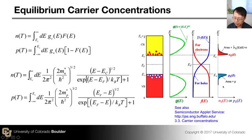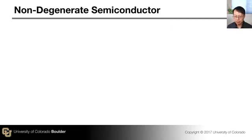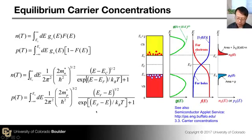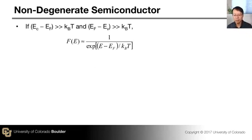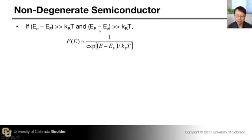To perform these integrals, the general case requires numerical techniques. However, there are important simple cases where the integration can be done analytically. That is the case when E_C minus E_F is much greater than kT (thermal energy), meaning the Fermi level is far below the conduction band edge. In this case, we can approximate the Fermi-Dirac distribution function with a simple exponential factor, which is the Maxwell-Boltzmann probability function.